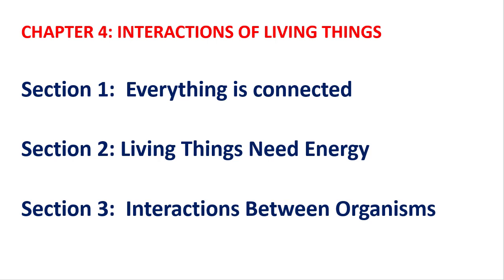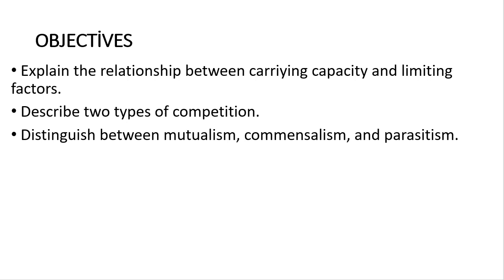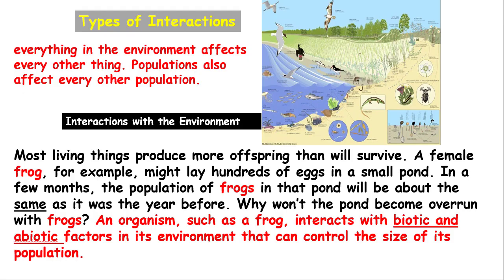Hello, Chapter 4: Interactions of Living Things. Section 1: Everything is Connected. Section 2: Living Things Need Energy. Section 3: Interactions Between Organisms. We have already finished Sections 1 and 2. Today's objectives: explain the relationship between carrying capacity and limiting factors, describe two types of competition, and distinguish between mutualism, commensalism, and parasitism.